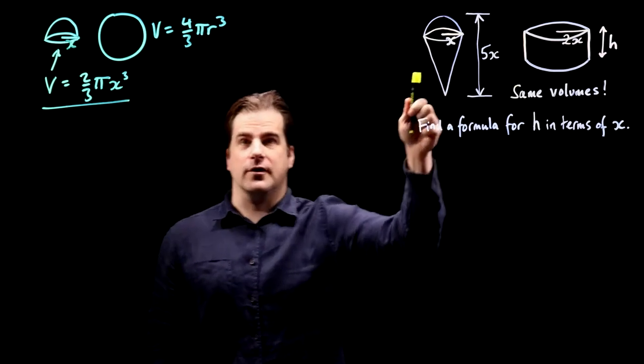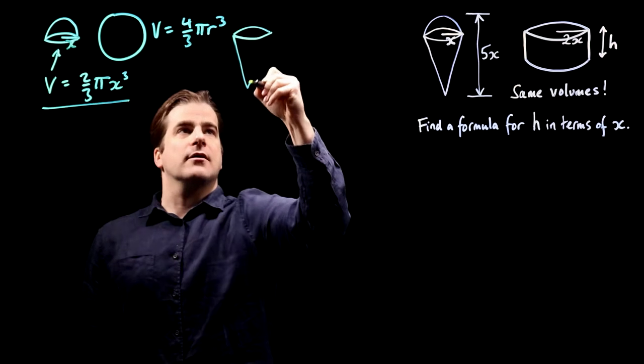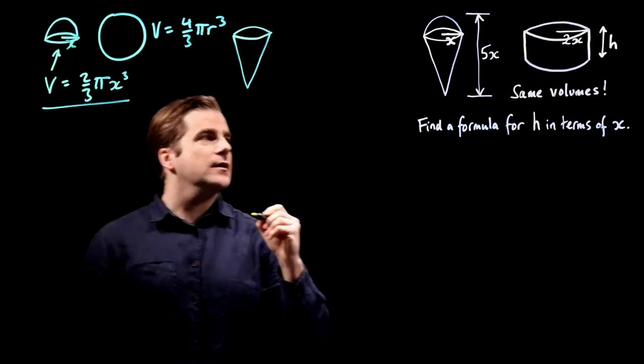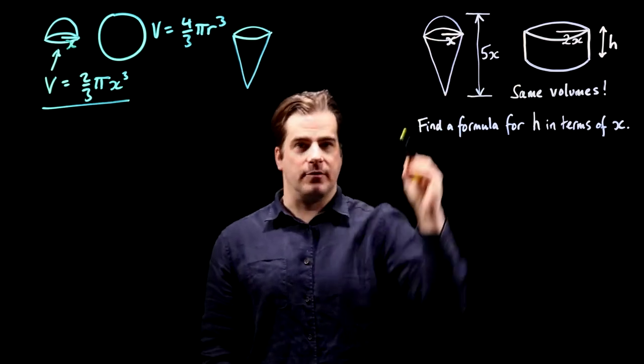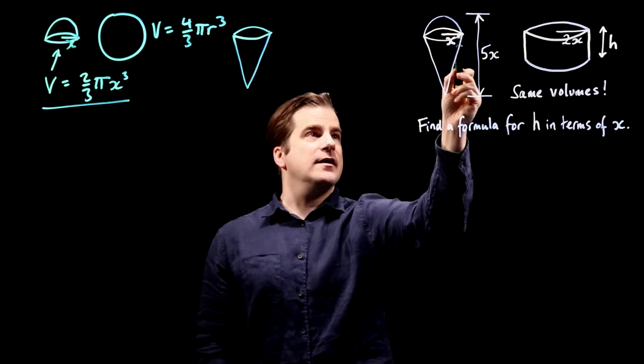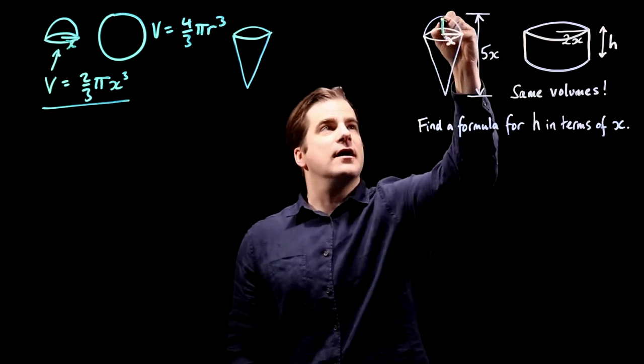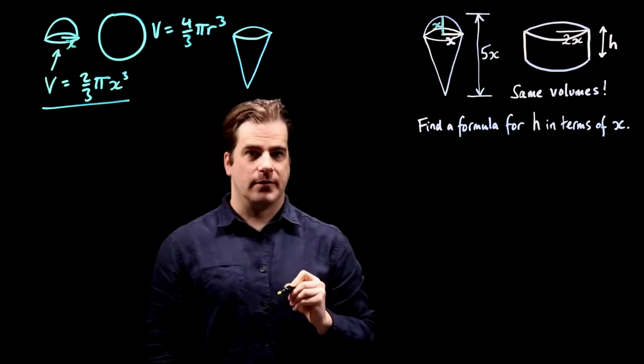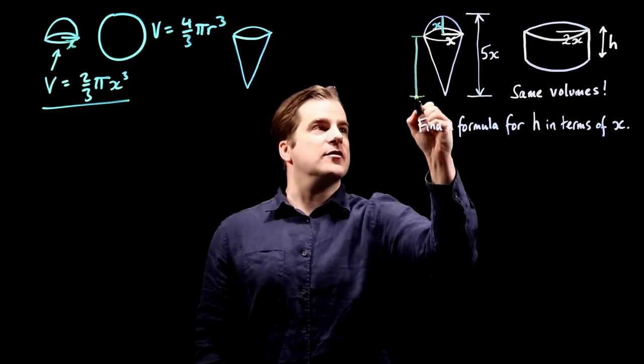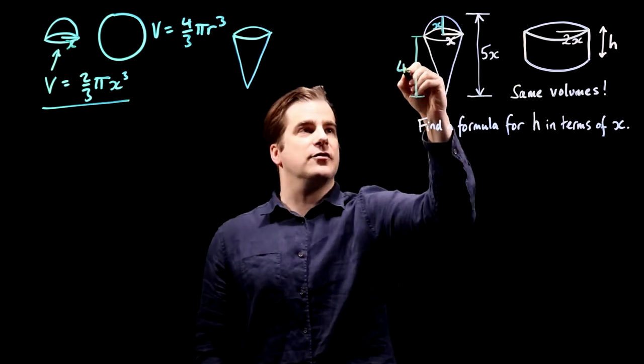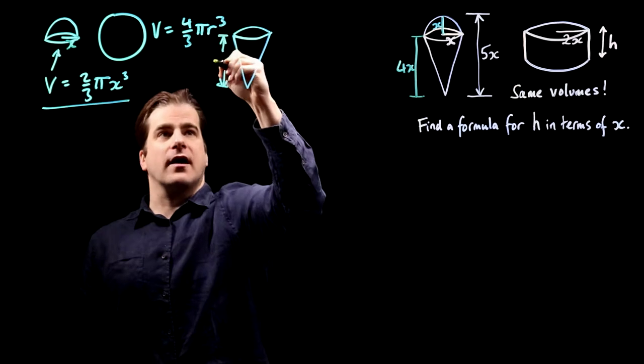Now we need the volume of the cone bit. We're told that from the top of the ice cream to the tip of the cone is 5x. Now if the radius of the ice cream is x, therefore the height is also x, which means that from there to there must be 5x minus x, so that's 4x. So the height of this thing here is 4x.